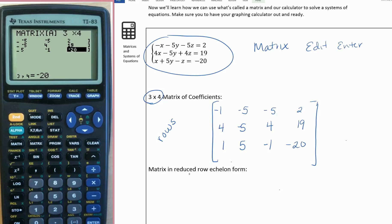Now we need to put this in what's called reduced row echelon form. That's going to give us our answer. To do that, hit second quit to go back to the home screen.